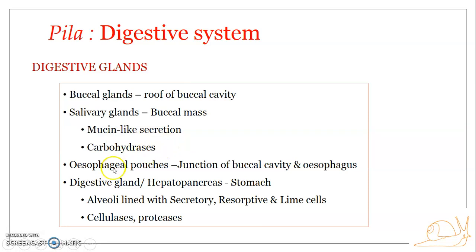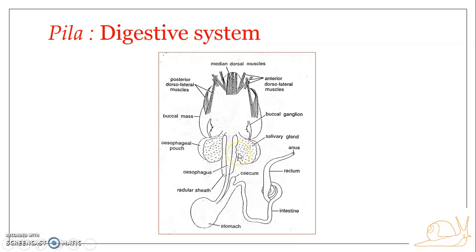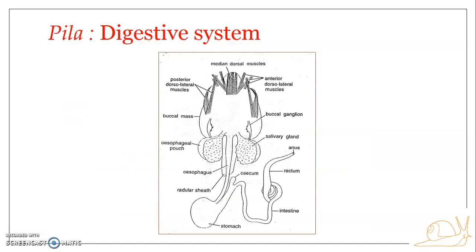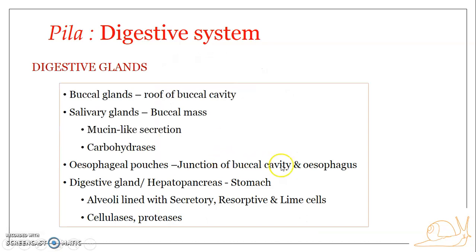The next structure is the esophageal pouch. There is a pair of esophageal pouches lying below the salivary glands. Each pouch opens by a narrow duct at the junction between the buccal cavity and the esophagus. These esophageal pouches are believed to secrete digestive enzymes.